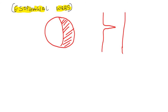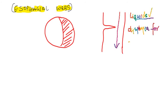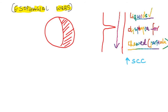In esophageal webs, there is no dysphagia for liquids since liquids can pass freely through the compromised lumen. However, there will be dysphagia for partially chewed solid food. Additionally, esophageal webs increase the risk for squamous cell carcinoma of the esophagus, making them a risk factor for that malignancy.